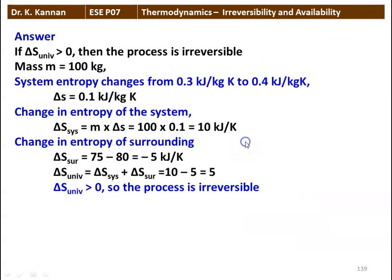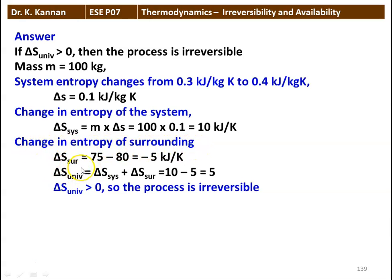If delta S universe is greater than 0, then the process is irreversible. Mass equals 100 kilograms. The system entropy changes from 0.3 to 0.4 kilojoules per kilogram Kelvin, so delta S equals 0.1 kilojoules per kilogram Kelvin. Delta S system equals mass times delta S equals 100 times 0.1 equals 10 kilojoules per Kelvin. Delta S surrounding equals 75 minus 80 equals minus 5 kilojoules per Kelvin. Delta S universe equals 10 minus 5 equals 5, which is greater than 0, so the process is irreversible.